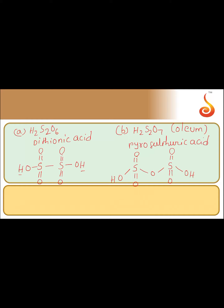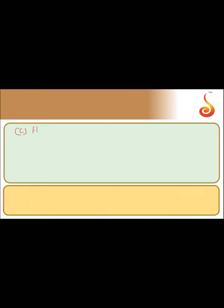Next, option C is H₂S₂O₅, which is pyrosulfurous acid. The structure of pyrosulfurous acid contains double bond O groups and OH groups, and one sulfur atom contains a lone pair. That is the structure of H₂S₂O₅.